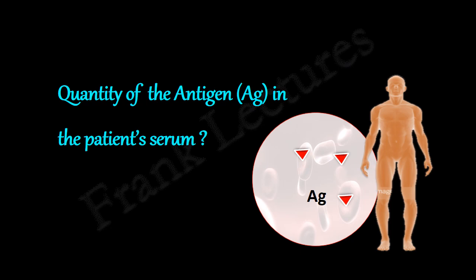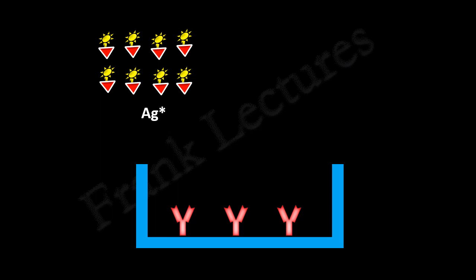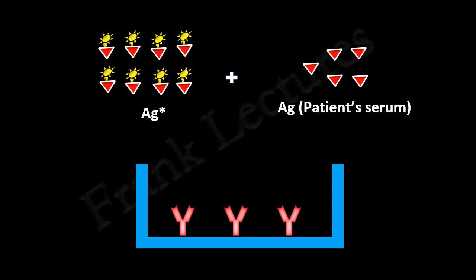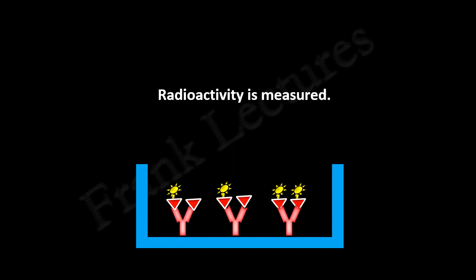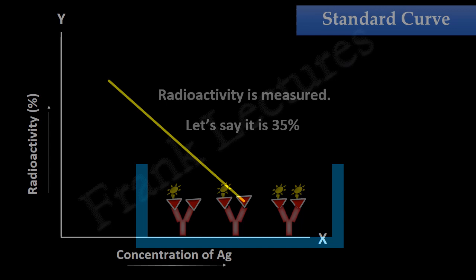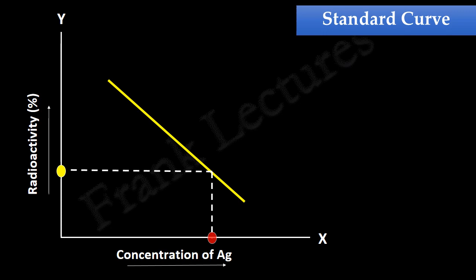Let's now quantitate the antigen in the patient's serum. We will take the same quantity of immobilized antibodies in a microtiter well as we used in the standard curve. To this well, we will add the fixed amount of radiolabeled antigen — again, the same amount as used in the standard curve — and along with this, we will add the patient's serum. The antigens present in the patient's serum will compete with radiolabeled antigens for antigen binding sites in the well. The well is rinsed to remove unbound antigens, and radioactivity is measured. Let's suppose the radioactivity measured for this well is 35%. Decrease in radioactivity indicates the presence of antigen in the patient's serum. We will extrapolate this value of radioactivity in the standard curve, and thus we will get to know the quantity of antigen present in the patient's serum.